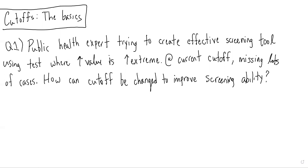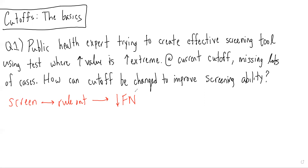This is a good question because it ties in some of the concepts from our testing characteristics lecture. When we are looking at a screening test, what we really want out of this test is to be able to rule out patients with the disease. Therefore, if we want to rule out patients with the disease, we want a low false negative result. If we get a negative result, we want to trust that they truly do not have the disease. And we remember, if we want a test with a low false negative result, that test would have a high sensitivity.